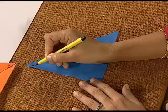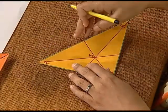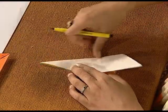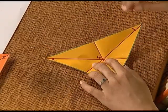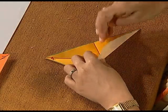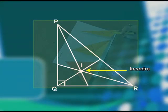Similarly, we will find the position of incenter in a right triangle. We have right triangle P Q R. By following the same process of folding, we can find bisectors of angles P, Q, and R. Unfold and see that all the bisectors meet at a common point called the incenter.